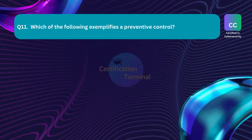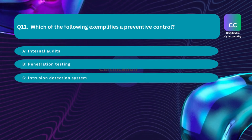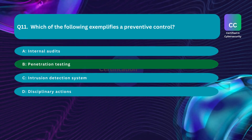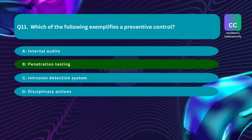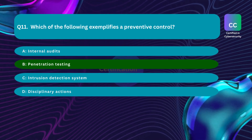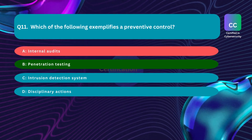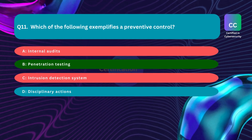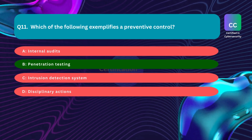Question number eleven: Which of the following exemplifies a preventive control? Option A: internal audits. Option B: penetration testing. Option C: intrusion detection system. Option D: disciplinary actions. The correct answer is Option B — penetration testing. Penetration testing is a proactive security practice designed to uncover vulnerabilities before they can be exploited, involving authorized individuals mimicking real-world attacks to evaluate security safeguards. Internal audits and intrusion detection systems are examples of detective controls, while disciplinary actions are an example of corrective controls.